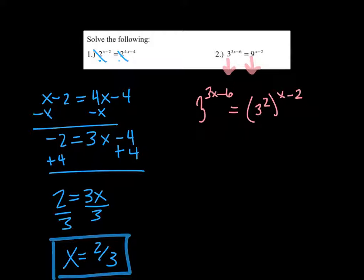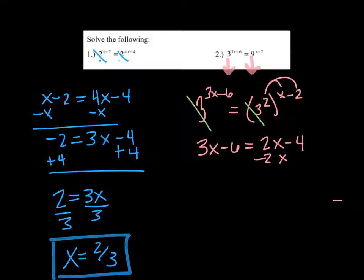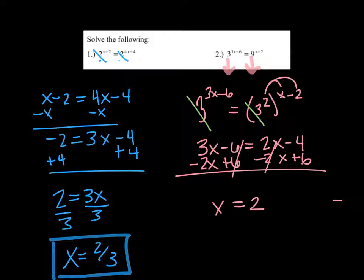So what happens then is we can cancel out that base of 3, and that 2 you're going to distribute to the power, because power to a power you multiply. So we'll end up with 3x minus 6 equals 2x minus 4. And you just solve it like you normally would. Subtract 2x and add 6, and we get x equals positive 2. So that is one method, equating the exponents or canceling out the base when they are the same.